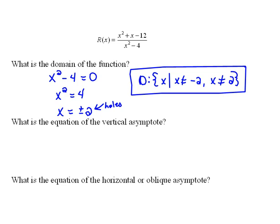Now it's asking, what is the equation of the vertical asymptote? Well, our holes in the domain are our potential vertical asymptotes, but we will not know until we look at this in fully reduced form.